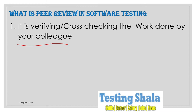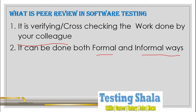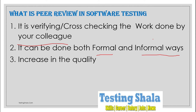That is where we do a peer review. Normally, peer review is done both in a formal and informal way. In formal peer review, you send emails and formal documents. In the informal way, you are just sitting next to the other person and reviewing the documents.